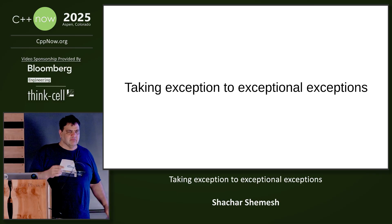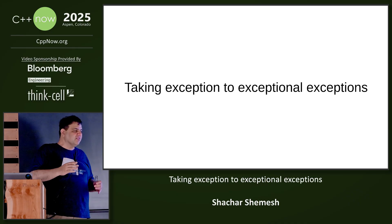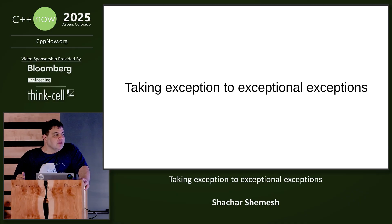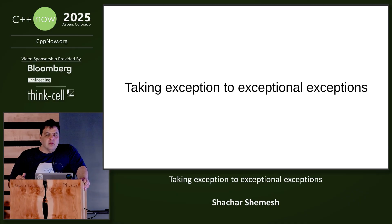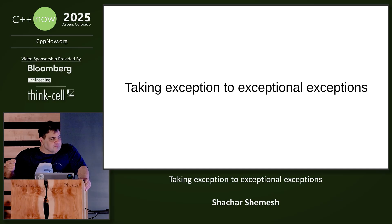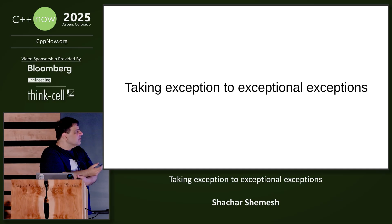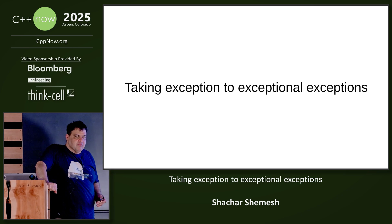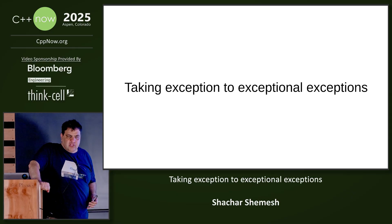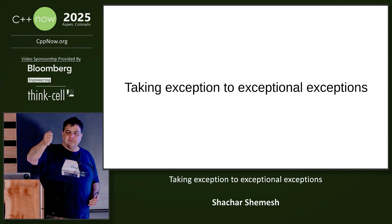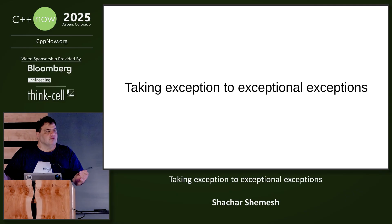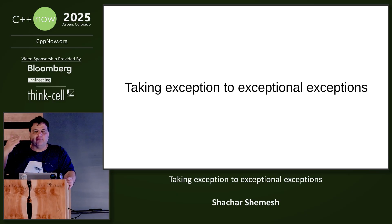std::exception has a single 'what'. Some of the standard library extensions have more information if you want to catch them specifically. Nobody is obligated to use std::exception, so you can throw anything. But that's not the main problem. The main problem is that you only get to put information on the exception object at the point where the exception happened. That's usually not enough information to debug.